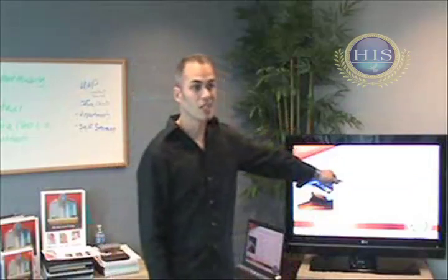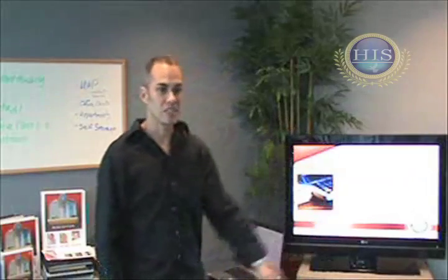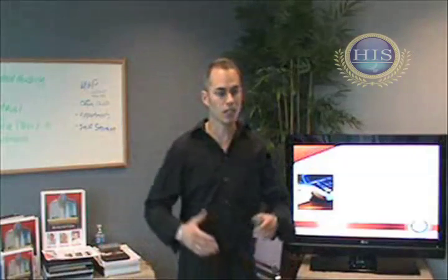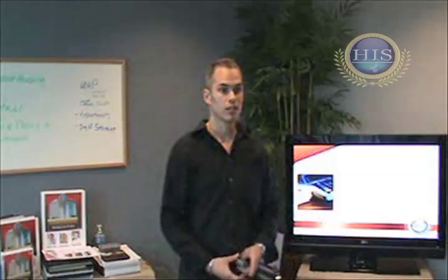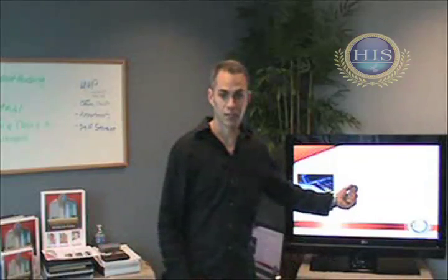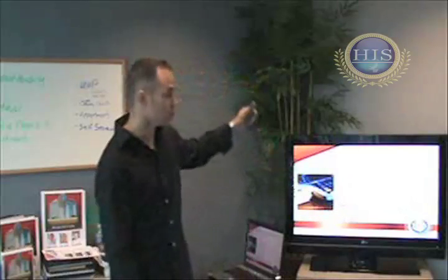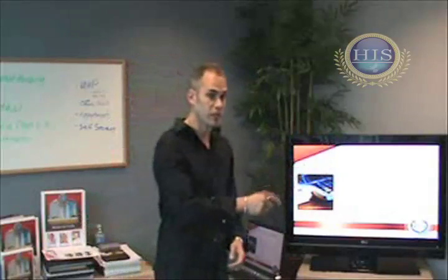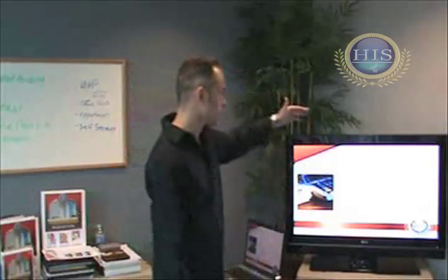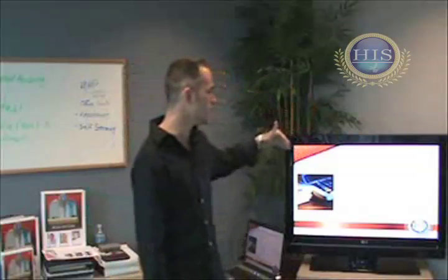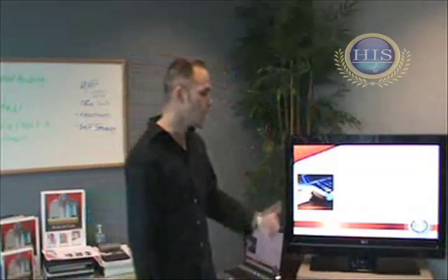Then what you do is deduct the vacancy on the property. Even if you find properties that appear to be 100% occupied, you better take out vacancy when you're running your numbers. It might be a standard of 10%, depending on your marketplace. So you take your GSI — your gross scheduled income — minus your vacancy, and it equals the gross operating income, or the GOI.